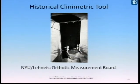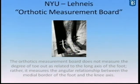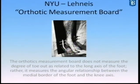Historically, our clinometric tool was the NYU Lean Ice Orthotic Measurement Board, which many schools still use as part of their educational material for lower limb orthotics. But Lean Ice himself said in his own paper that it does not measure the degree of toe-out as related to the long axis of the foot — rather, it measures the angular relationship between the medial border of the foot and the knee axis.